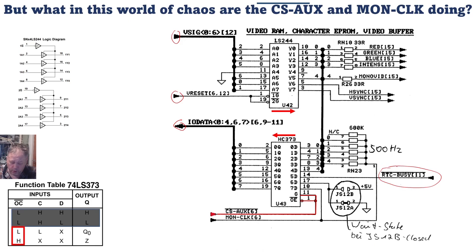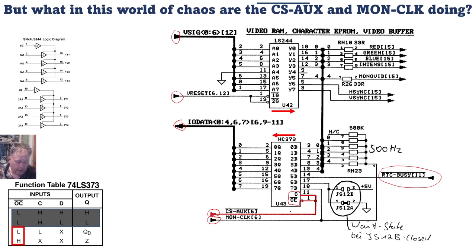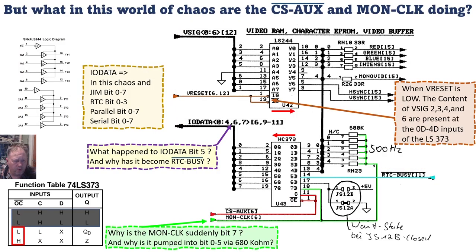We have the RTC busy, the CX AUX, and the mono clock — which I think is the monochrome clock but I'm not sure. I've included the function table for the 74LS374 so we can see what's going on. On U43, certain pins are connected together, so there won't be situations where C and output enable have different values — they will always have the same value. When the output enable line is high, it doesn't matter what C will be.